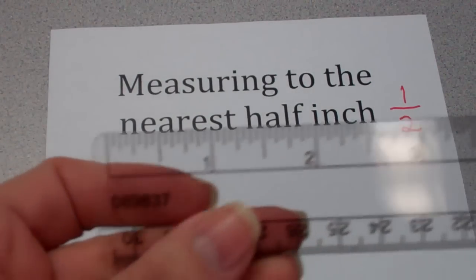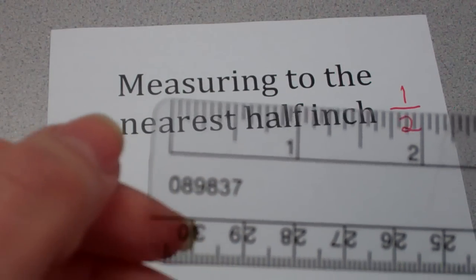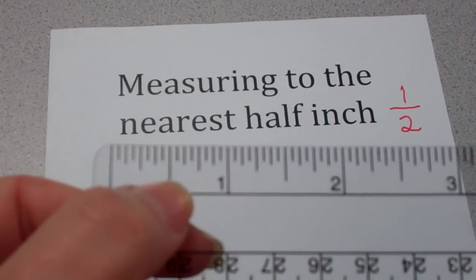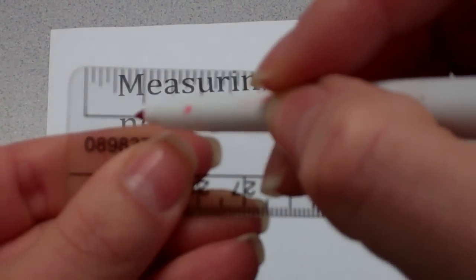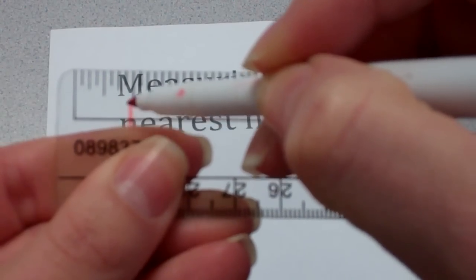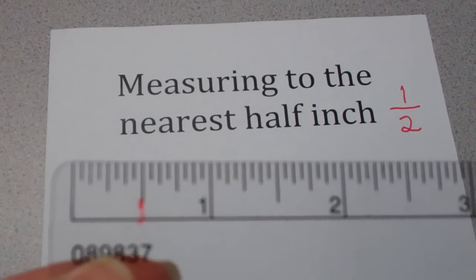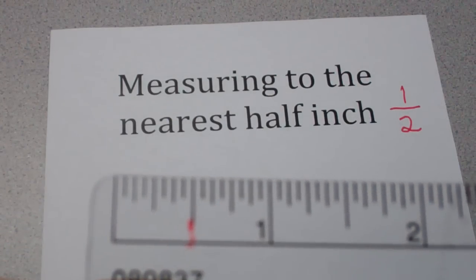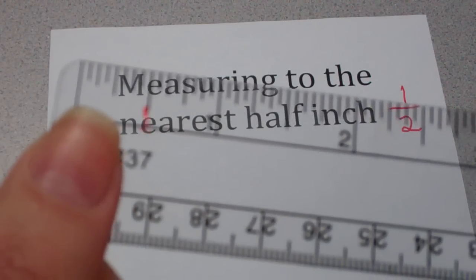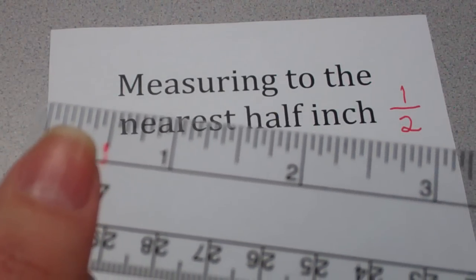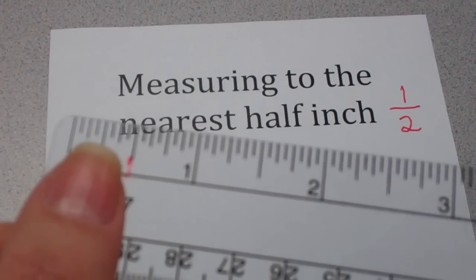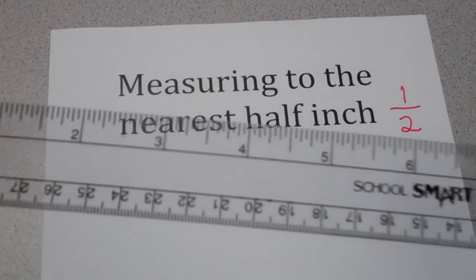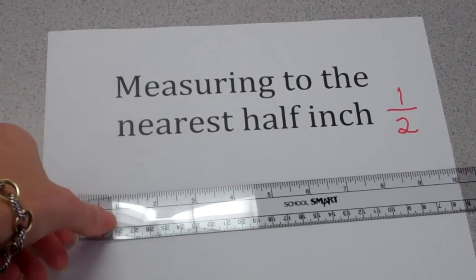For example, when I look on my ruler, I see that this first inch, if I were to split it in half, I would see that this hash mark right here represents the half inch mark. Can you think of something that's about half an inch long? Well, it just so happens that Mrs. Taglia's thumb is about half an inch long. We're going to take that idea of measuring to the nearest half inch by measuring some more objects.